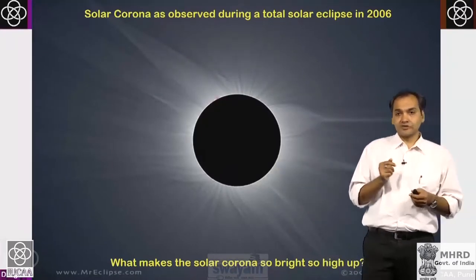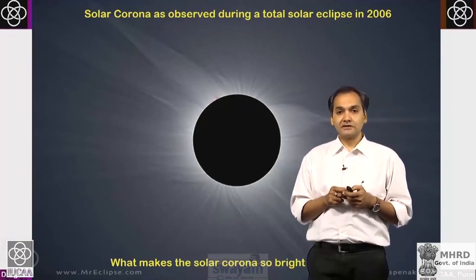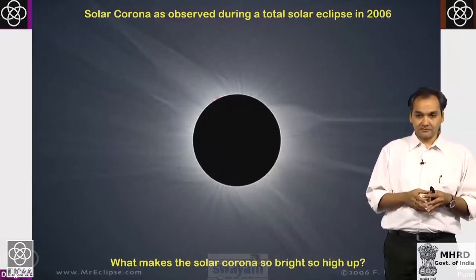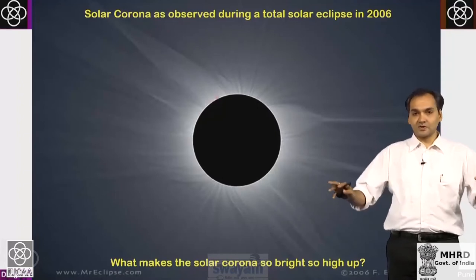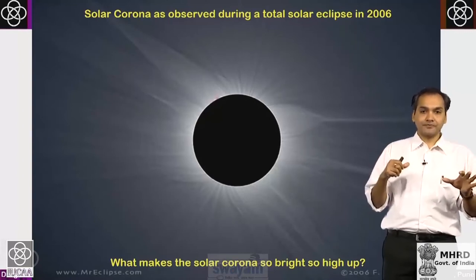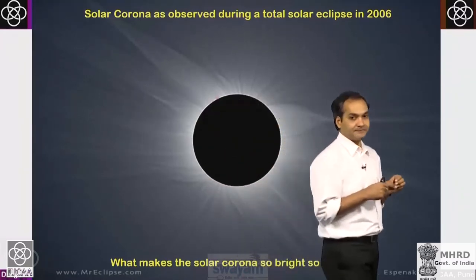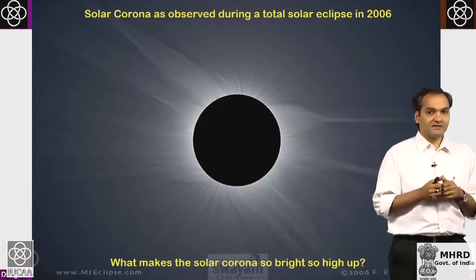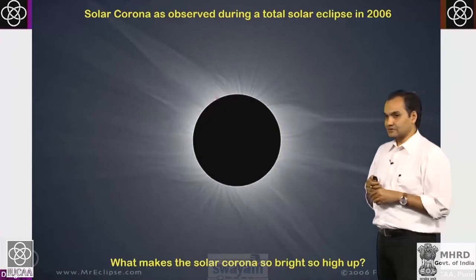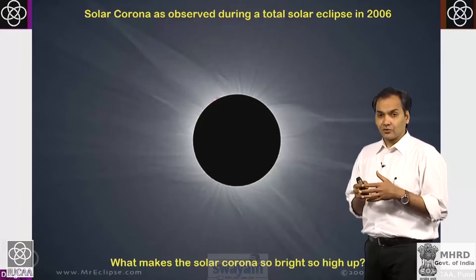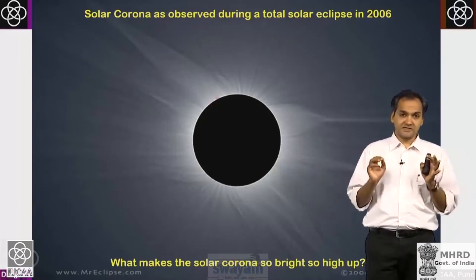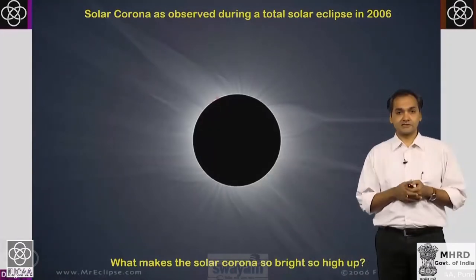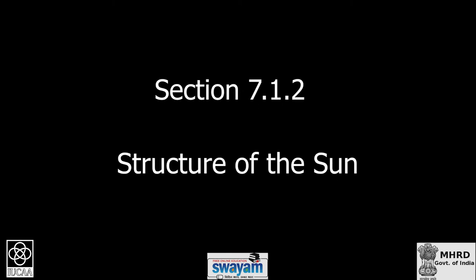When the moon blocks the solar disk during an eclipse, you see the outer atmosphere extending five to seven solar radii — a crown-like structure called the solar corona. Various structures are visible, including open plumes extending far out. The corona is about a million times less bright than the disk — like a 500-watt and a 2-watt bulb side by side. The moon's angular size exactly matches the sun's disk, blocking photospheric light and revealing the corona, whose light is photospheric light scattered by free electrons.